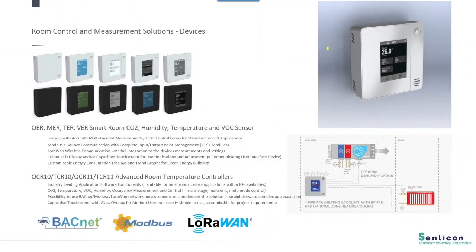Sendikon's room control range includes both sensors, smart sensors, and advanced controllers. All of the devices have an optional touchscreen, and with the touchscreen you can see the current information — there are four locations for temperature set points and so on. The devices are available with built-in temperature, humidity, and also CO2 and VOC measurements.